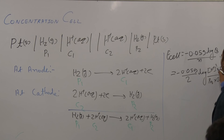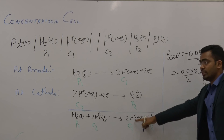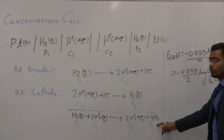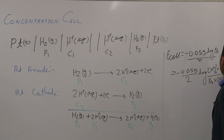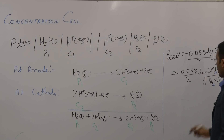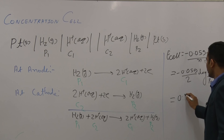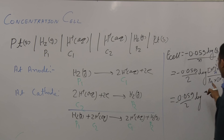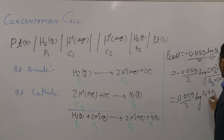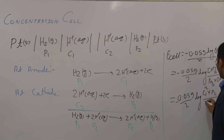This is the anode and this is the cathode. The final E_cell expression is: E_cell = 0.059/2 · log(C1 · P2) / (P1 · C2²).